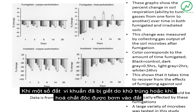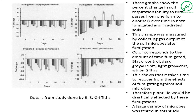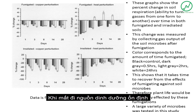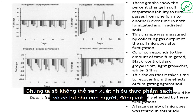A great example of this is shown in the study done by B. S. Griffith and others. This study showed that when some soil bacteria were killed with fumigation, or gases being pumped into the soil, there was a statistically significant decrease in soil function.